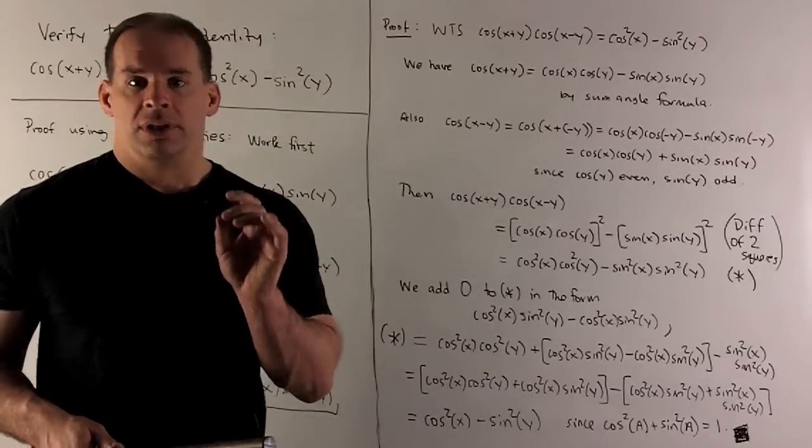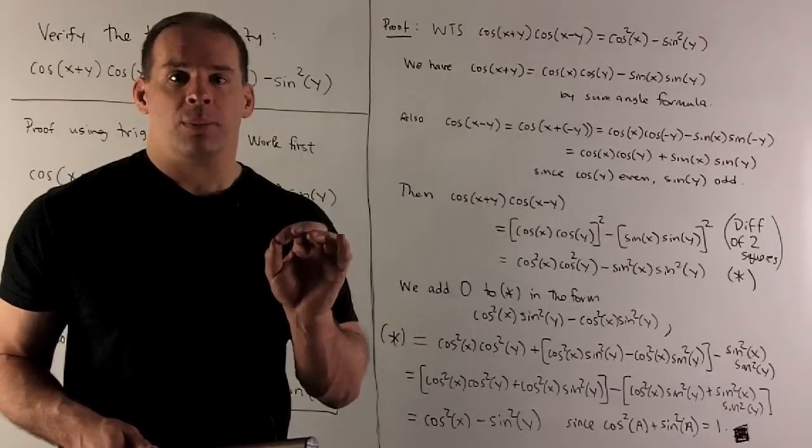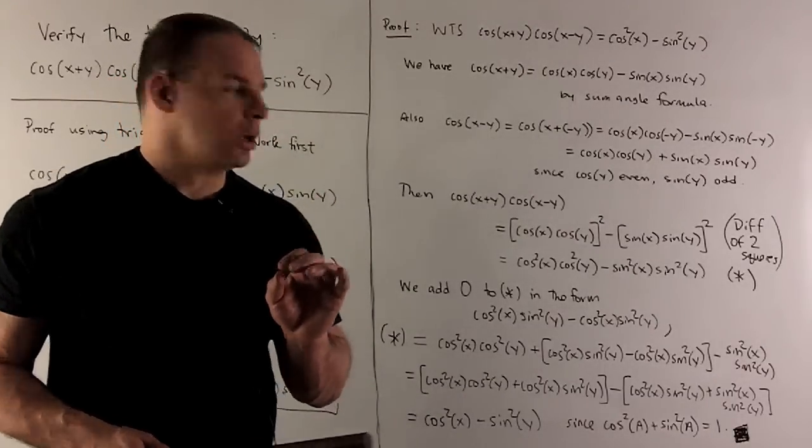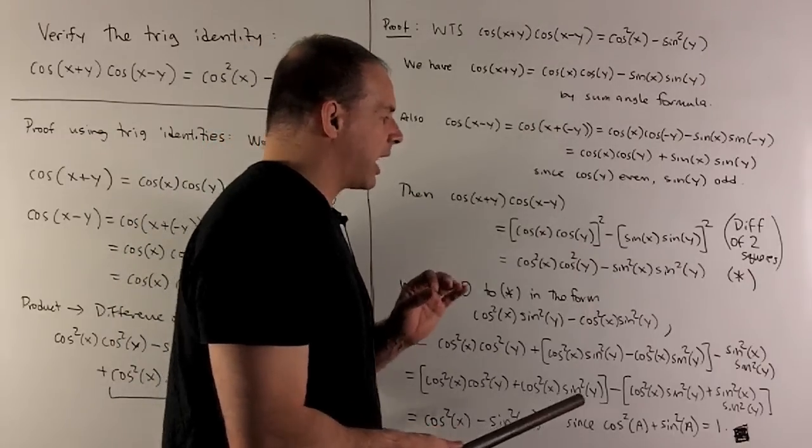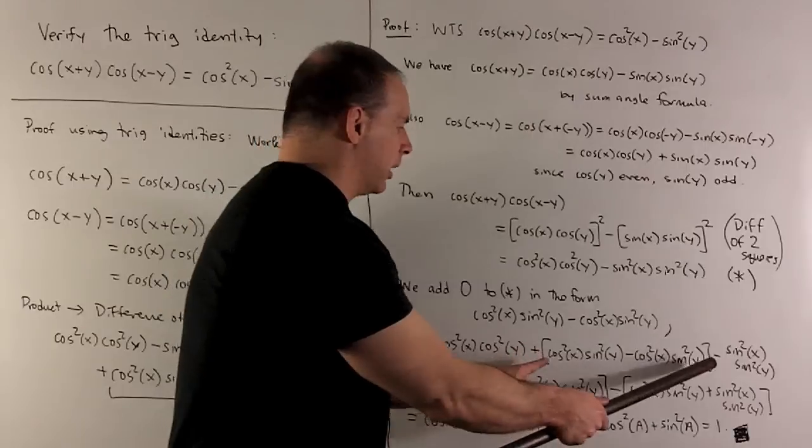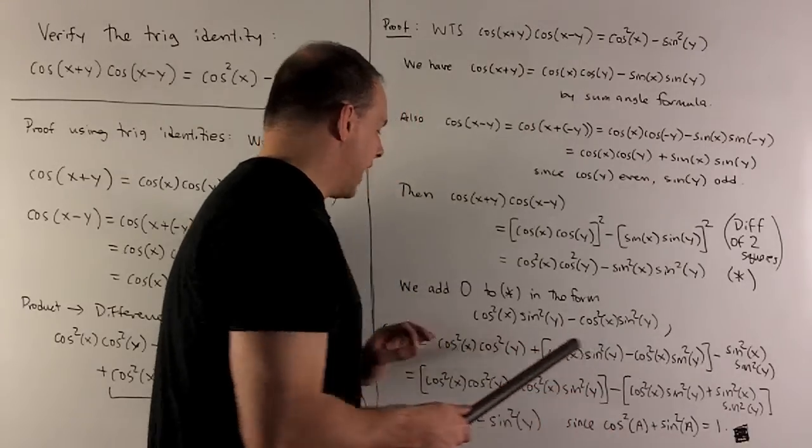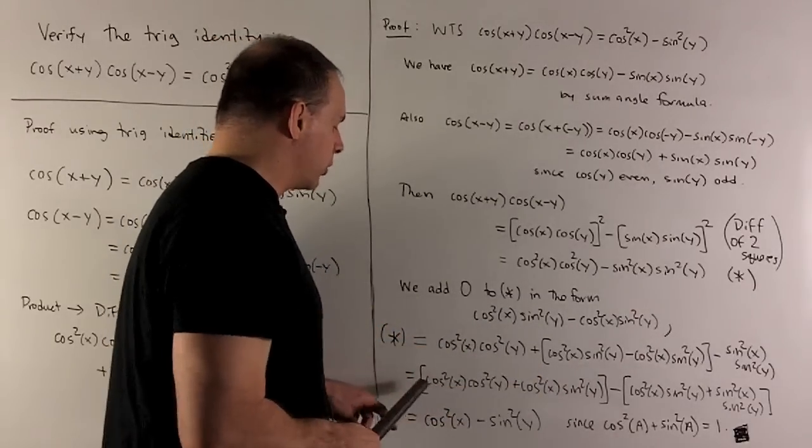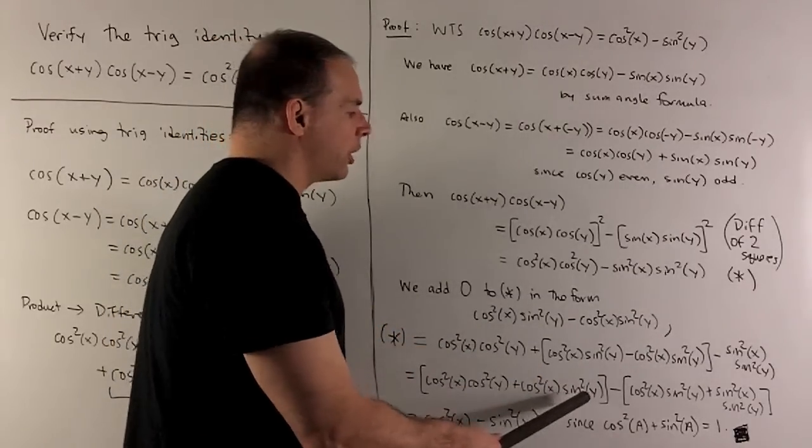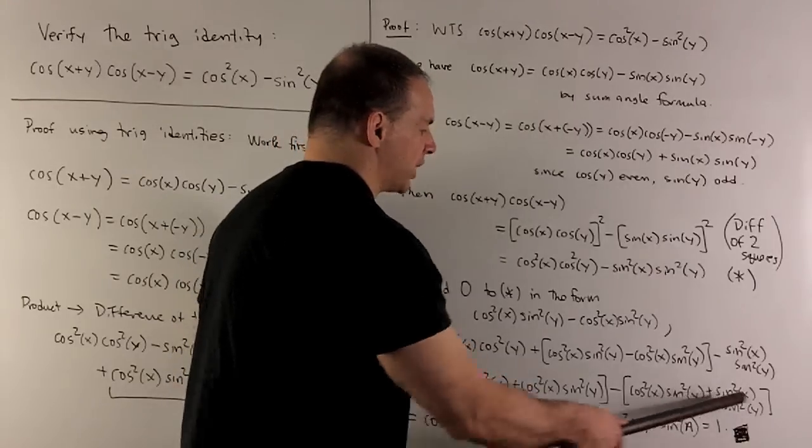Okay. To get any further past star, we're going to add zero in the form cosine squared x, sine squared y minus cosine squared x, sine squared y. Put that in the middle here. Then, we can regroup. And then, I'll be able to factor out a cosine squared x from our first term, sine squared y from our second term.